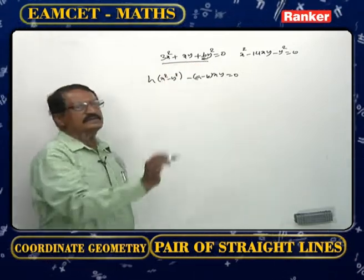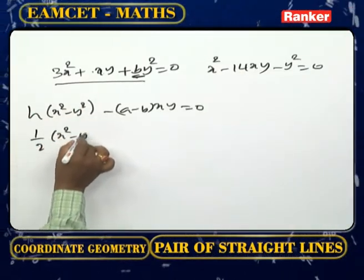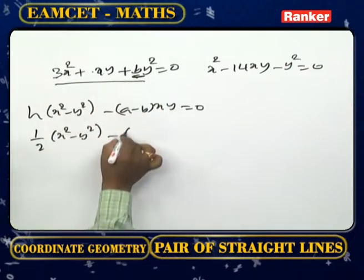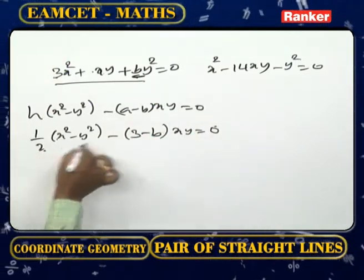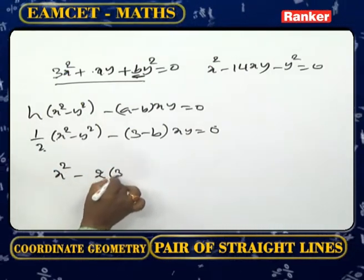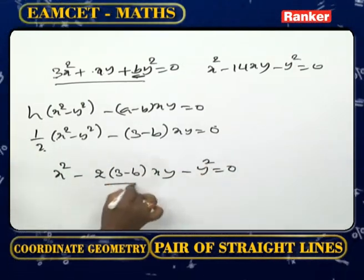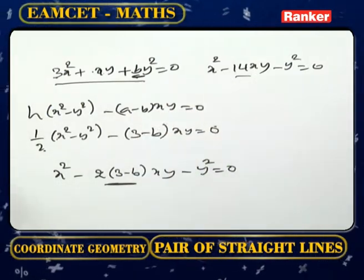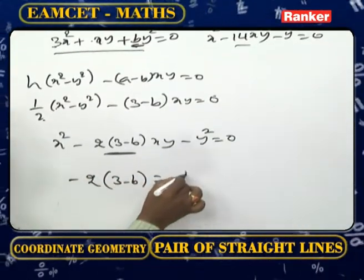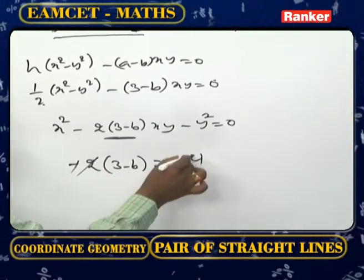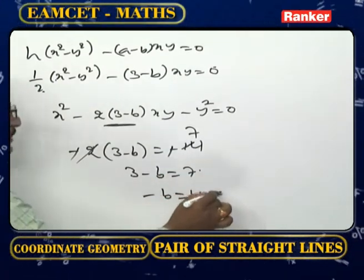Using the formula h(x² − y²) − (a − b)xy = 0, where h = 1/2, a = 3, b = b, we get: (1/2)(x² − y²) − (3 − b)xy = 0, or by cross multiplication: x² − 2(3 − b)xy − y² = 0. Equating the coefficient of xy: −2(3 − b) = −14, so 3 − b = 7, giving b = −4.